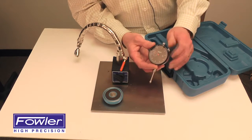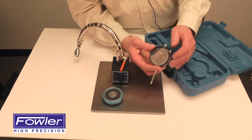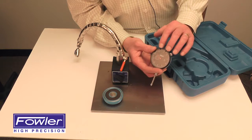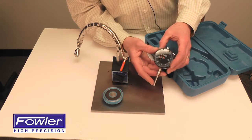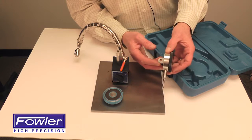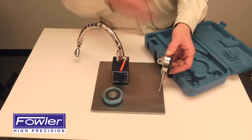It has a bezel lock for easy zeroing, tolerance indicators, pull-up knob, carbide contact point, and a center lug back. The center lug back can be removed and replaced with the magnetic back for various applications in restricted work areas.